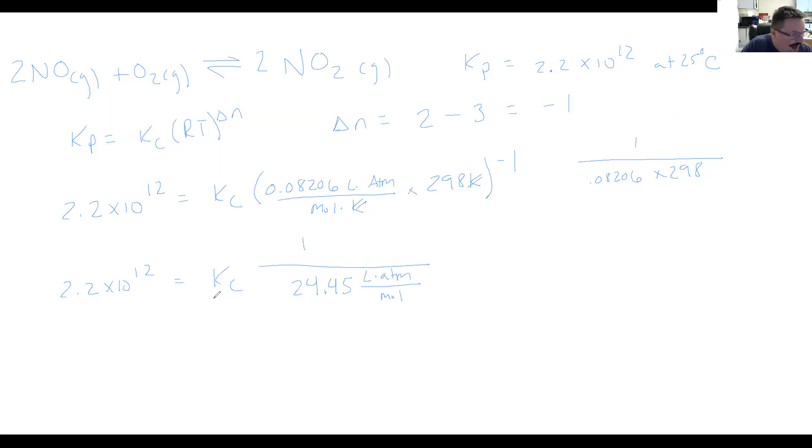24.45 and Kelvin here would cancel. So I'd have liters atmospheres over moles. I need to find K sub C. So the way I'm going to do that is by multiplying both sides through by this. So when we do that, we get very good.